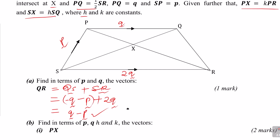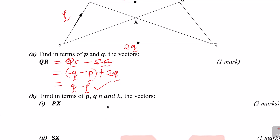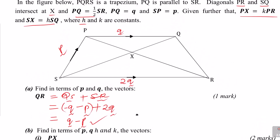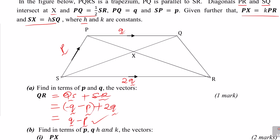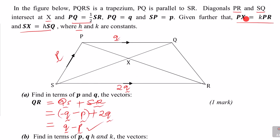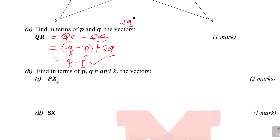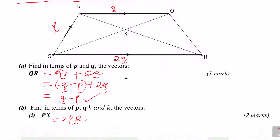Next, part B: find the vectors PX and SX in terms of P, Q, H, and K. For PX, we use the given statement that PX equals K times PR. So we need to identify PR first, which is given by K times PR.